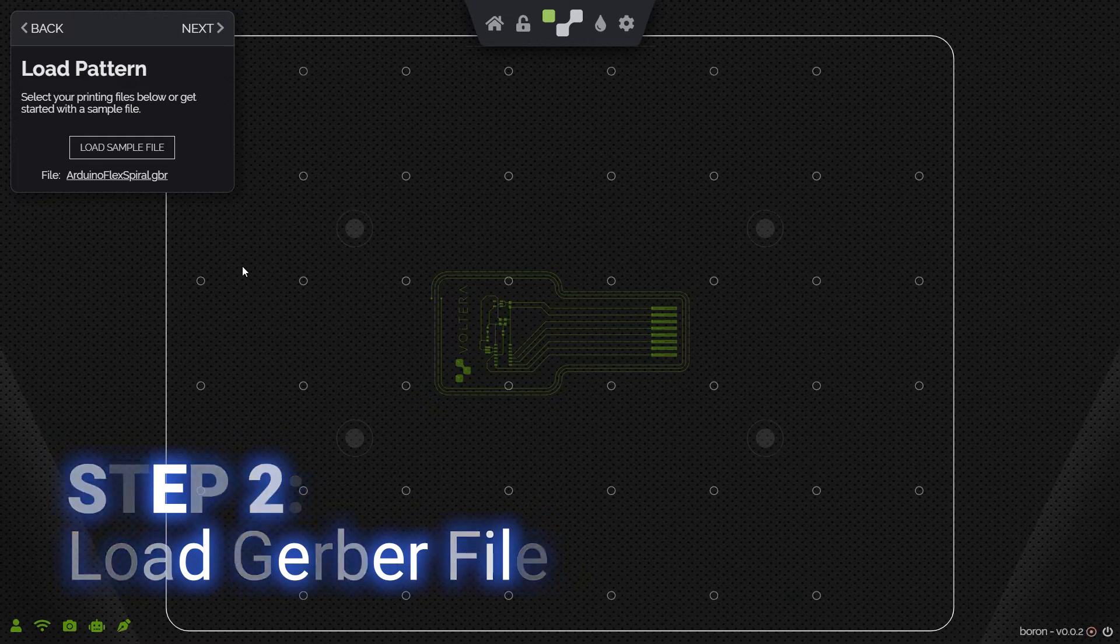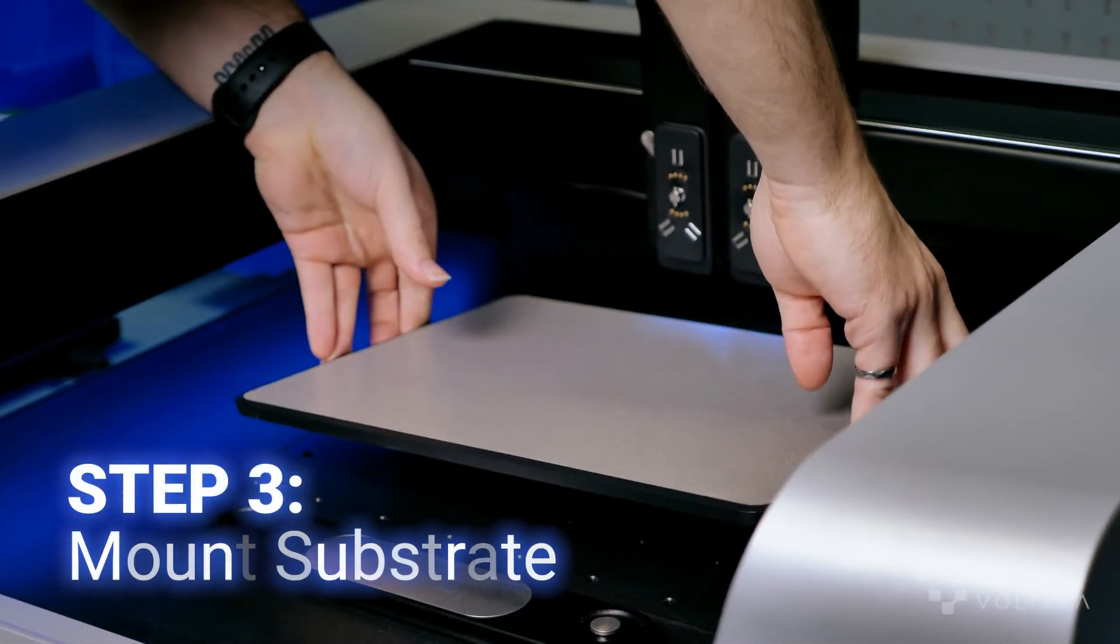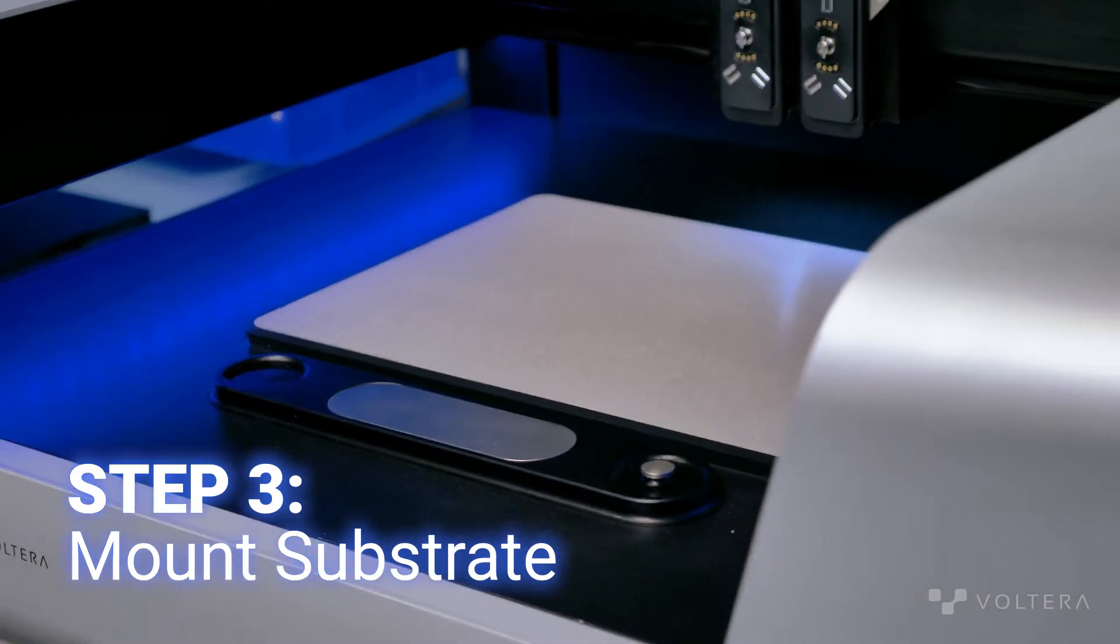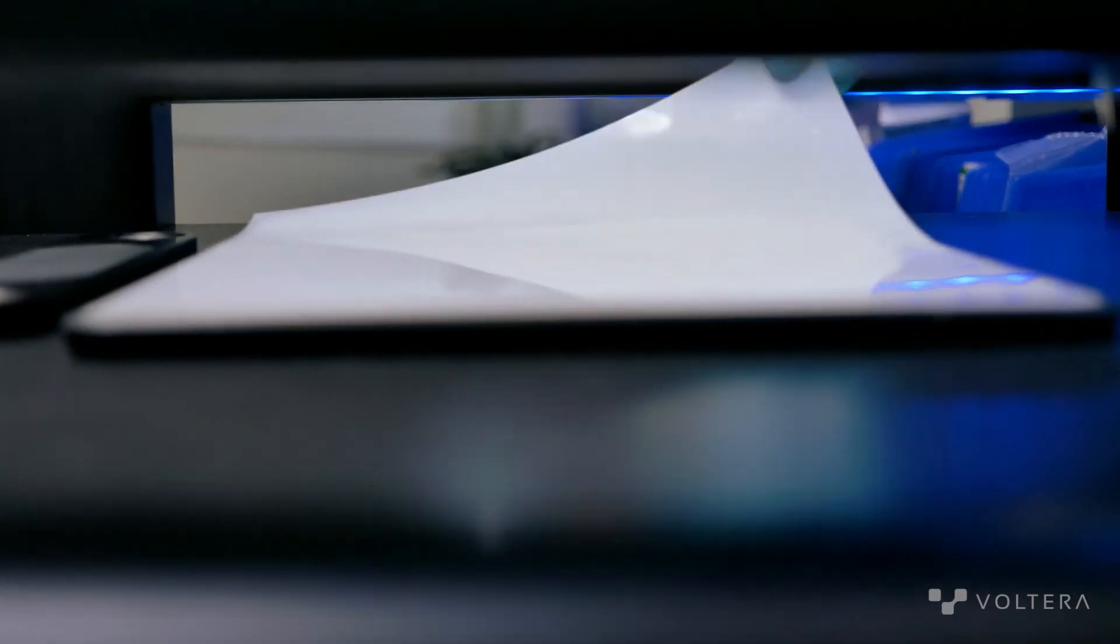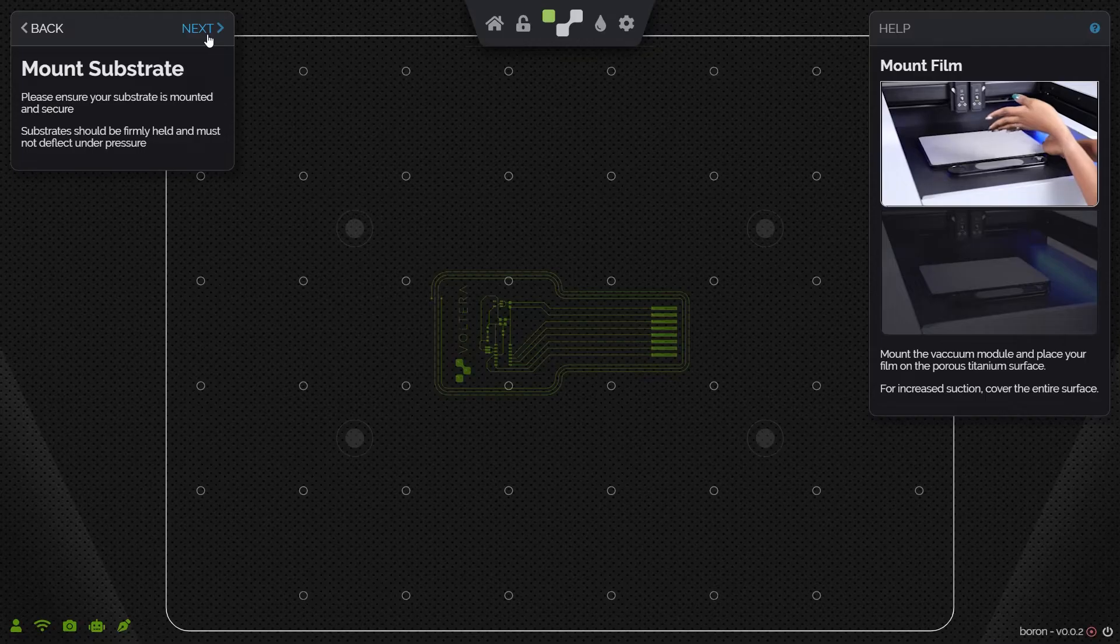Now comes the mount substrate step. Because this is a flexible film, we're going to use the vacuum table. Then, we just place the PET film on top, and we're going to hit next.